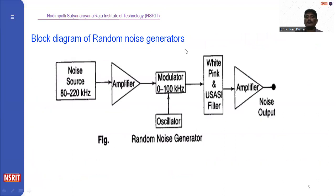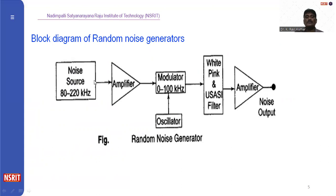This is the block diagram of the random noise generator. This generator produces noise which is used to test signals. For the noise source, we are using a diode — a non-linear device that produces noise. The combination of a resistor and the diode produces noise in the range of 80 to 220 kilohertz.